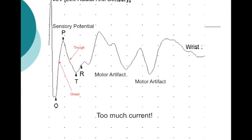The things on the right are motor artifact. Again, we're just delivering too much current here. You really should stop when the sensory potential peaks and when you're producing the least motor artifact possible.